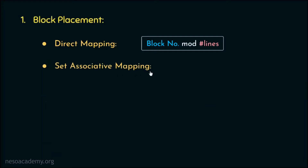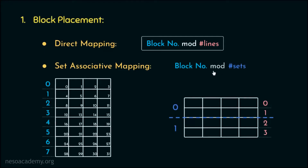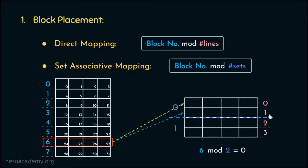In set associative mapping, block placement takes the main memory block number and the number of sets, performing a modulus operation to get the set number. For example, to place main memory block number 6 in a two-way set associative cache with two sets, we compute 6 mod 2, giving set number 0. If set 0 is empty, block 6 can be mapped to either line 0 or line 1.